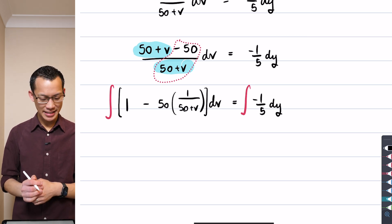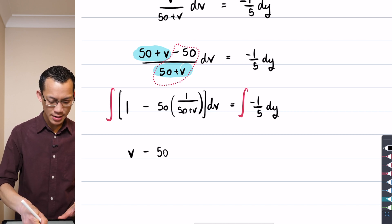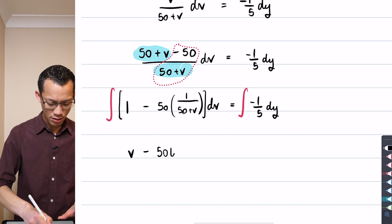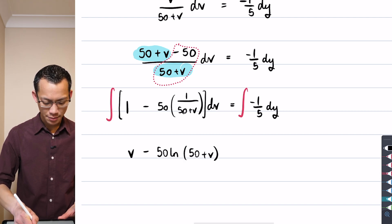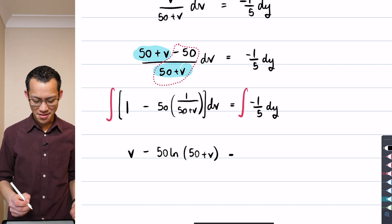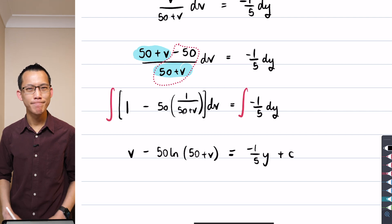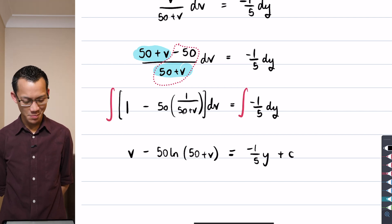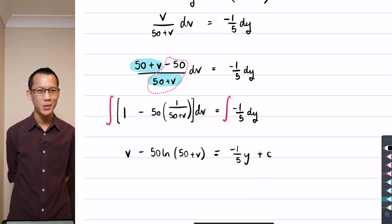Let's go ahead and let's integrate. So, I'm getting v on the left-hand side minus 50 log of 50 plus v equals. What do I get on the right-hand side? This is minus 1 over 5y plus my constant. Okay. Does that look alright to you?